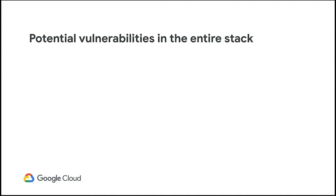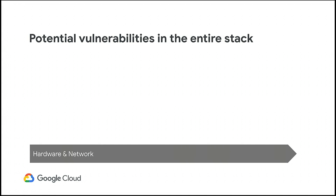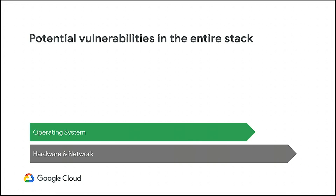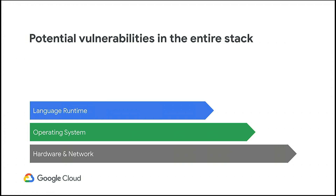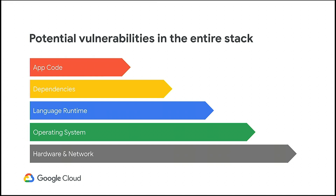Those things could occur anywhere in your stack. If you're building on top of some VM — say a Raspberry Pi at home — you're responsible for hardware, network, patching the operating system when something like Spectre happens, updating Node whenever it gets security patches, and also the dependencies you're pulling into your app, in addition to your app code. That's a lot to think about when your Raspberry Pi server is controlling a light bulb.